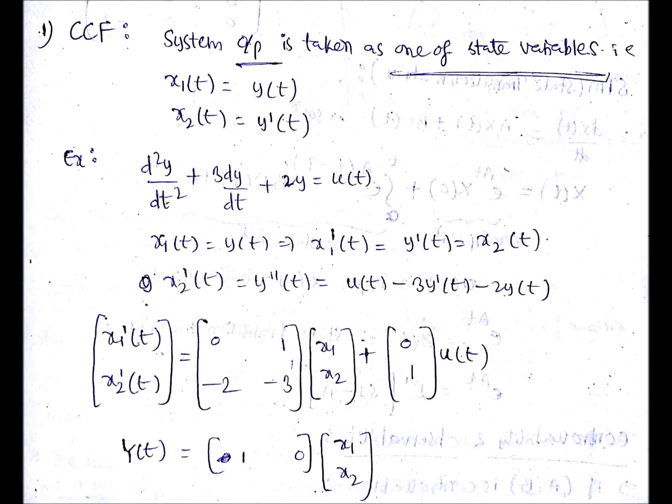x₁(t) equals y(t), so one of the state variables x₁(t) I'm choosing as output itself that is y(t), and other state variable as differentiation of y(t) that is x₂(t) equals y'(t) which is nothing but x₁'(t).